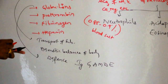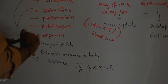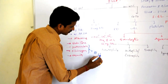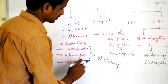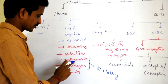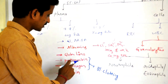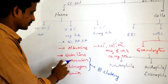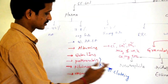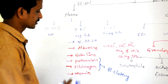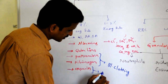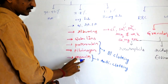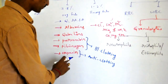Prothrombin and fibrinogen are blood clotting factors, responsible for clotting of blood. They are in inactive form and need to be activated. During the clotting mechanism, prothrombin is converted into thrombin and fibrinogen is converted into fibrin. Heparin is an anti-coagulant — it does not allow blood to clot inside the blood vessel.